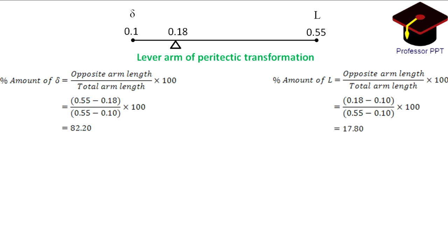Hence we can say that there is 82.2% of delta ferrite and 17.8% liquid at 0.18% of carbon at 1492 degree Celsius of constant temperature. The rule can be applied at any point from 0.1 to 0.55.